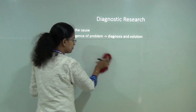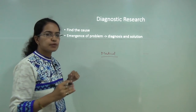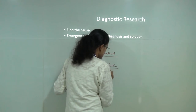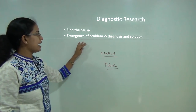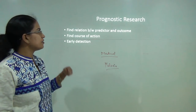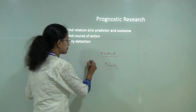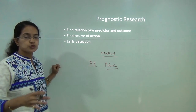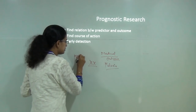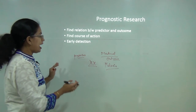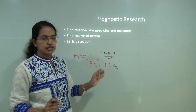Under diagnostic research, we try to find the cause after things have already happened. For example, a person who has malaria — once diagnosed, you are doing diagnostic research by trying to understand the cause and addressing the problem through diagnosis and adequate medicines. Under prognostic research, you study a region prone to malaria because it is a breeding ground for mosquitoes, and you try to rule out those breeding grounds. Prognostic research finds the relationship between an outcome — malaria — and a predictor — breeding areas — and takes preventive action. Prognostic research focuses on early detection and cure.